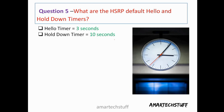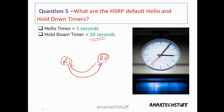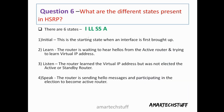Question five: What are the HSRP default hello and hold timers? Like every protocol, HSRP has hello and hold timers. HSRP routers exchange hellos between them every three seconds, and the hold timer is 10 seconds. So the default timers are 3 seconds for hello and 10 seconds for hold. You can change these default timers as needed.